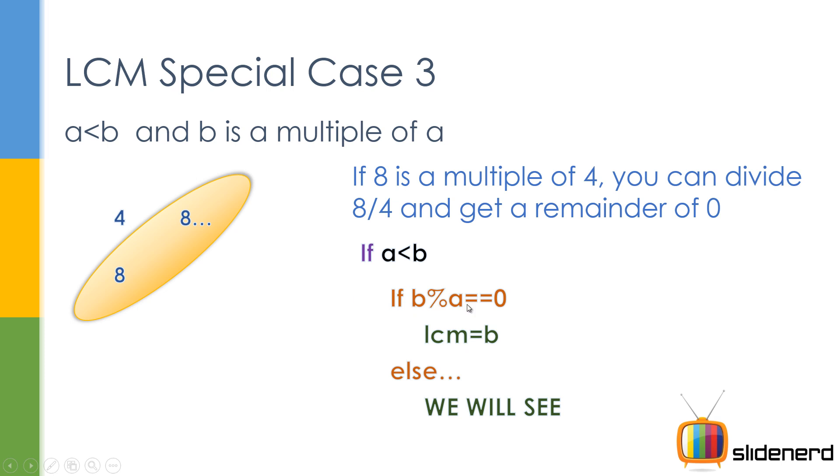B percent A means that we are gonna take 8, we are gonna divide that by 4 using the modulus operator. And that is gonna give us the remainder because we are using the modulus operator. That is what the modulus operator does in Java. So that being said, the remainder is gonna be 0. In that case, the LCM is gonna be the bigger number, which is B. And that's exactly what we are doing.